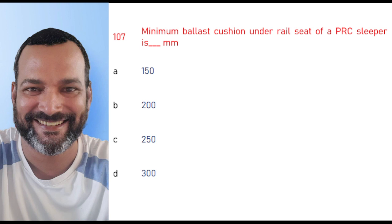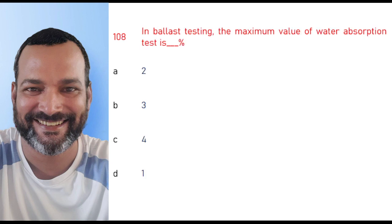Minimum ballast cushion under the rail seat of a PRC sleeper is 250 mm. In ballast testing, the maximum value of the water absorption test is one percent.